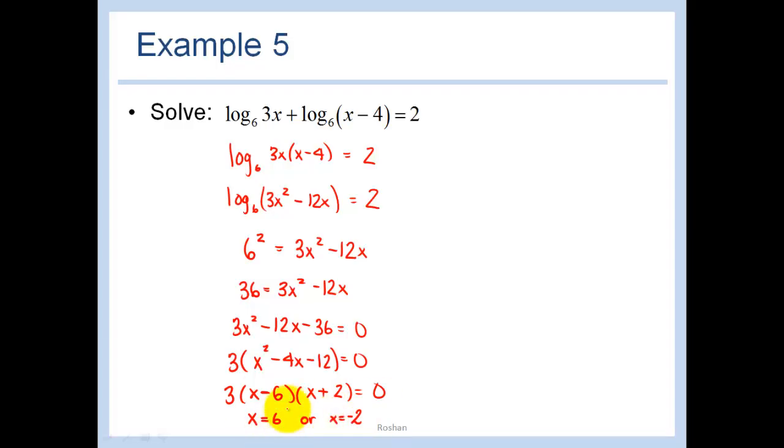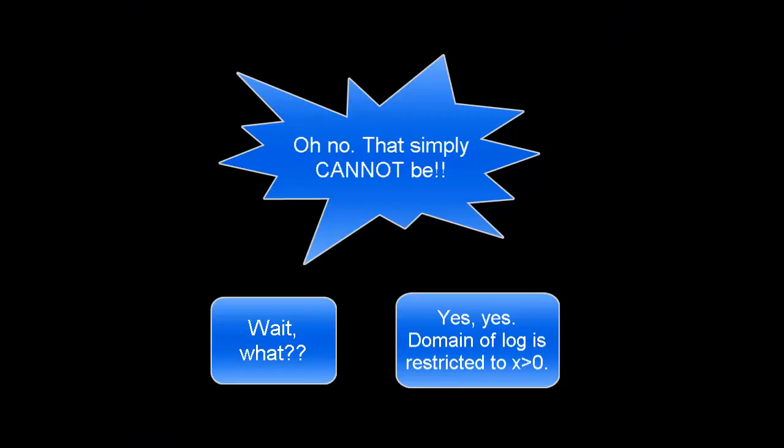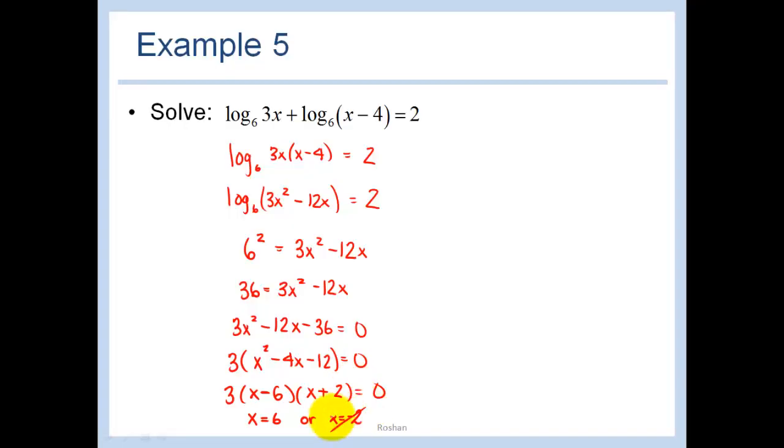Now let's make sure that these both work. Right off the bat I see that when I put in a negative 2 I would get log base 6 of a negative number, and we cannot do the log of a negative number. So right now I've eliminated one answer as being extraneous, and let's see if the other one works. Log base 6 of 18 plus log base 6 of 2. Well that would be log base 6 of 18 times 2, in other words log base 6 of 36. And log base 6 of 36, well 6 squared is 36 so that would be 2, and that is the right answer. So x equals 6.